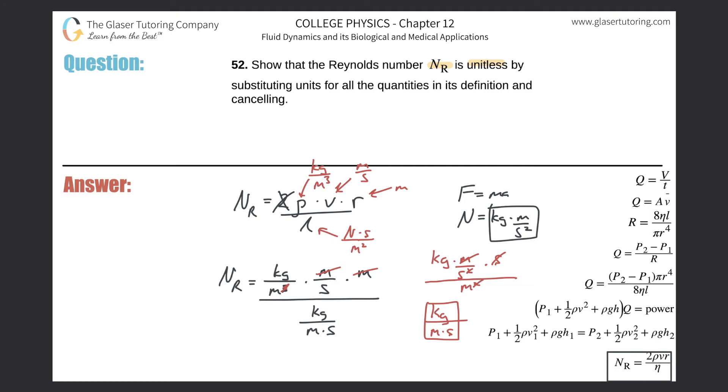And then what I'm going to do is take this and then do a keep change flip. When you're taking two fractions and dividing them, you can keep the top one, change the sign to a multiplication and then flip the second one. So the Reynolds number here will be, combining all this, this is going to be kilogram per meter times second times now the reciprocal of the denominator, which will be meter times second over kilogram.